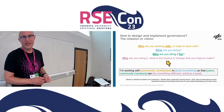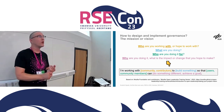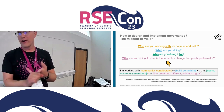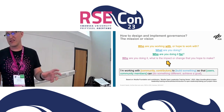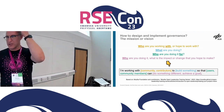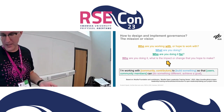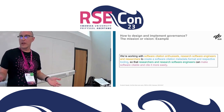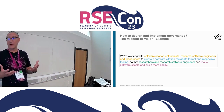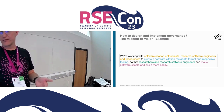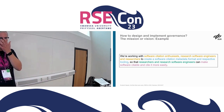The exercise encourages you to brainstorm answers to four questions: who are you working with or hope to work with; what are you doing; who are you doing it for; and why — what's the impact or change you hope to make. You then put those answers into a simple statement: 'I'm working with [community] to build [something] so that [users] can do [goal].' For the Citation File Format it looks like this: 'We're working with software citation enthusiasts, research software engineers, and researchers to create a software citation metadata format and respective tooling, so that researchers and RSEs can make software citable and cited more easily.'